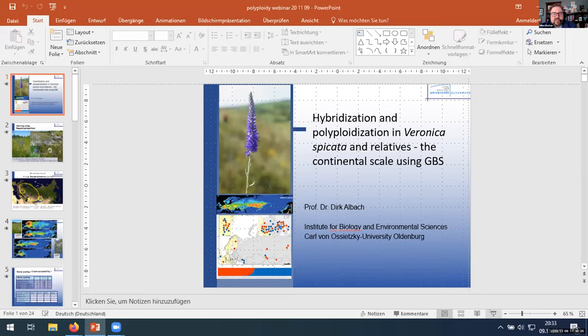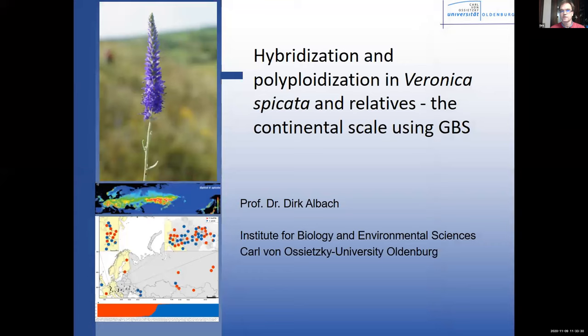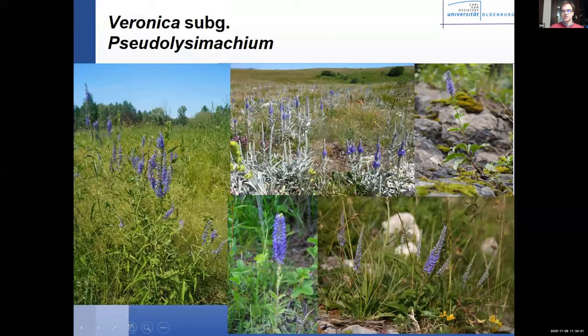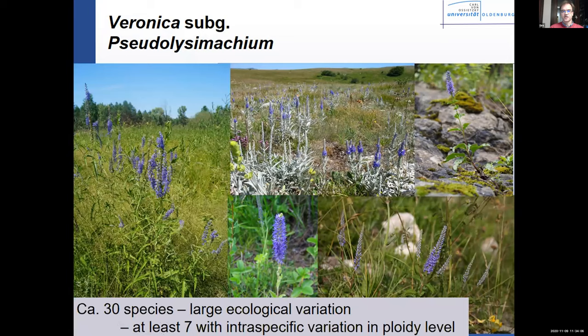I'm trying to compete with the nice orchid flowers and present some of the nicest-looking species of Veronica — I'm also talking about an orchid Veronica today. Our interest started with this group because it's such a nicely ecologically diverse group. It's about 30 species, but it has amazing ecological variety — from those in swampy areas and lake margins to those closer to the desert. Despite this large variation, there is a lot of intraspecific variation, and also seven species showing intraspecific variation in ploidy level with diploids and tetraploids occurring in basically the same region.